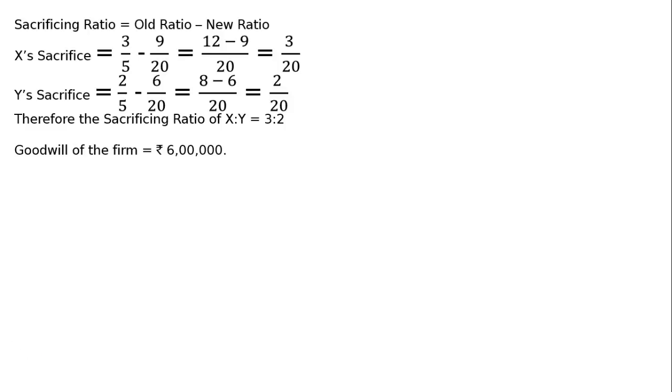Now, goodwill of the firm is given in the question as rupees 6 lakh. Hence, Z should contribute for goodwill rupees 6 lakh multiplied by 1/4, which is rupees 1 lakh 50 thousand. Goodwill is not necessarily contributed by the new partner in cash only; it may be in the form of stock, machinery, or other assets.